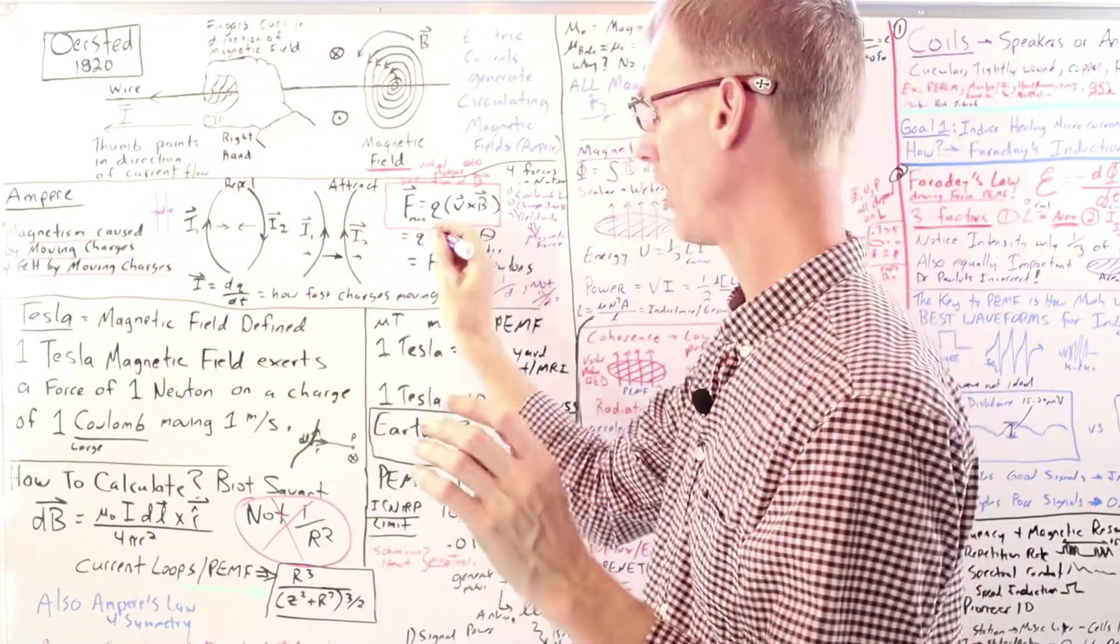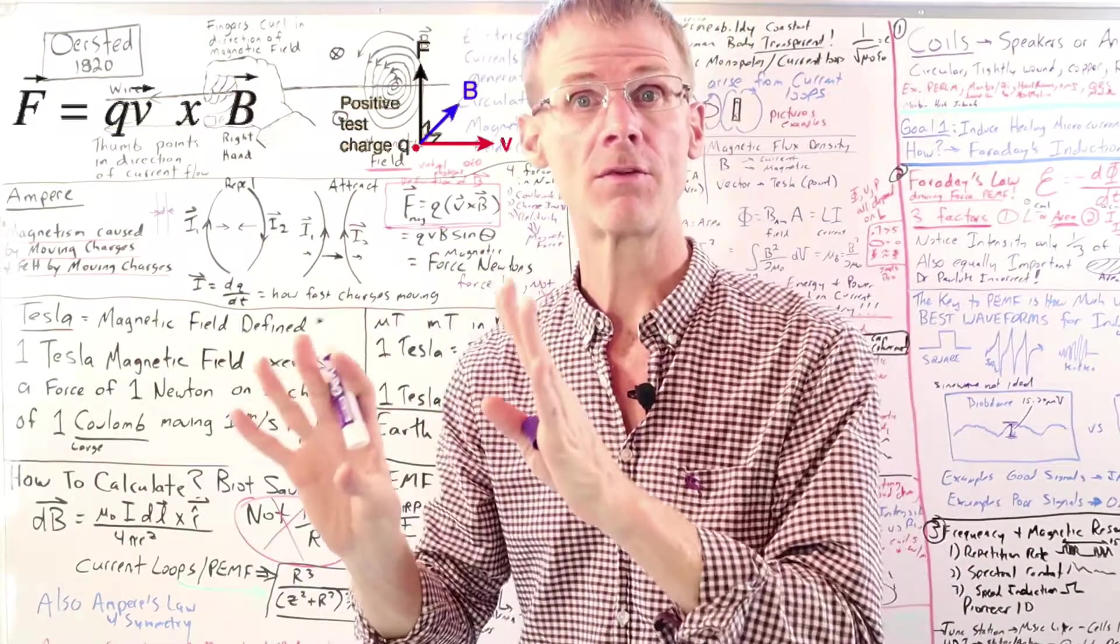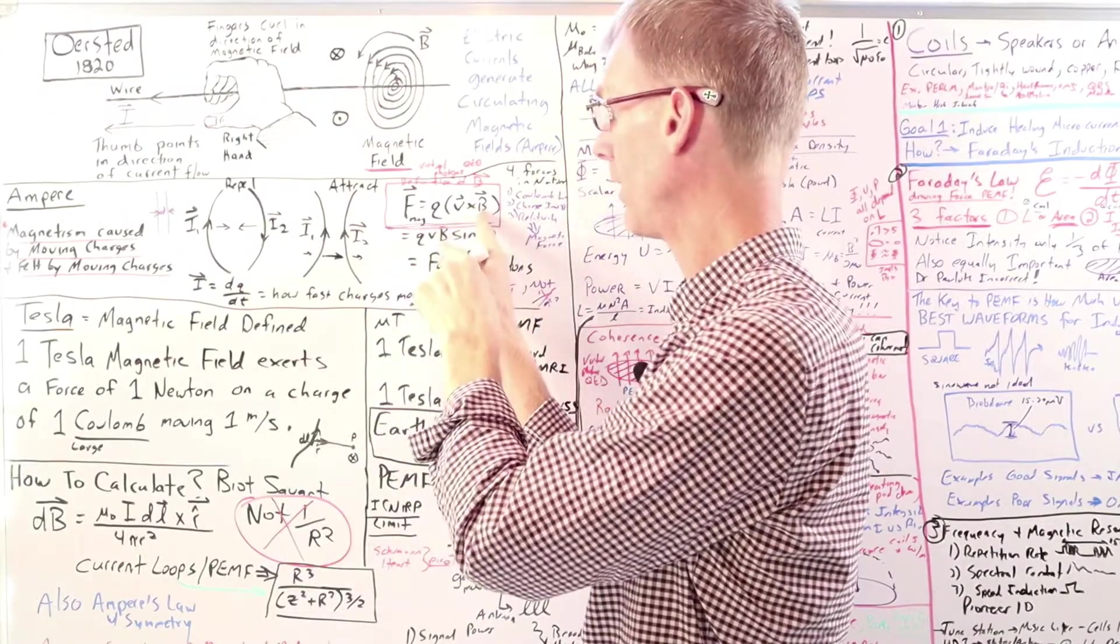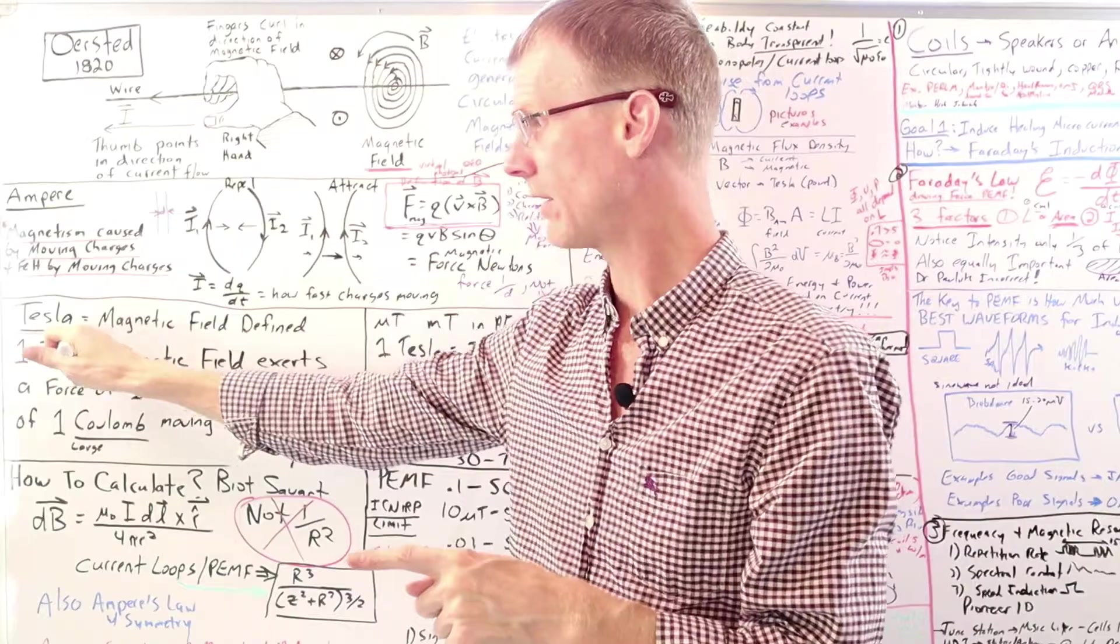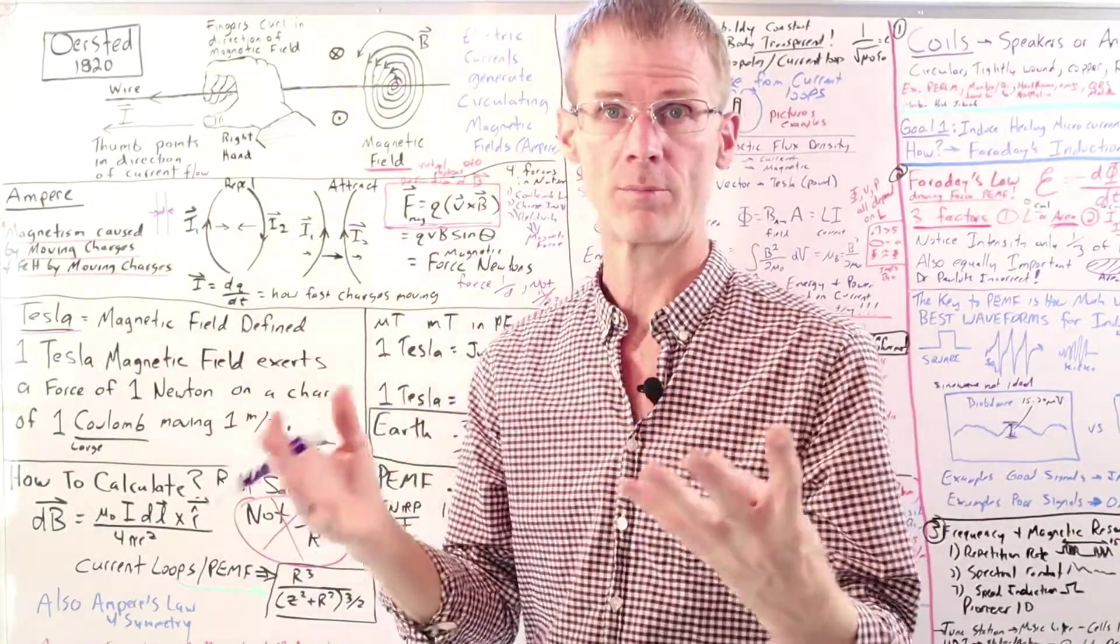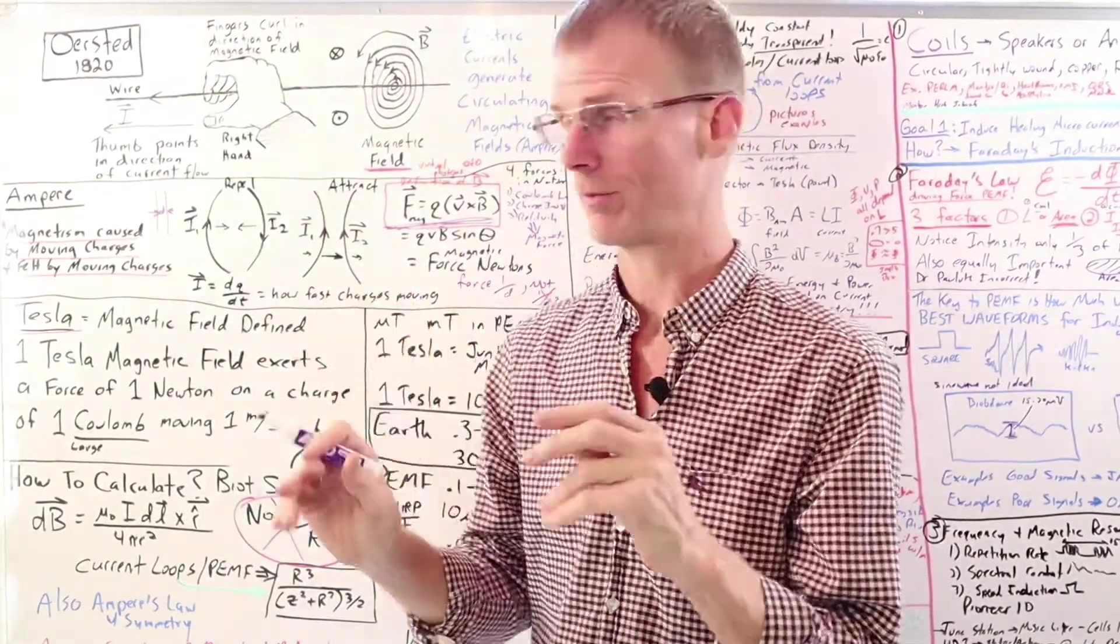Now from Ampere's experiments, it was discovered this magnetic force law. In fact, this is where magnetism is defined. It is the Lorentz force law that actually defines the magnetic field. So one of the units of magnetic field strength is called a Tesla. And because it's such a large unit, we usually use micro Tesla or milli Tesla.